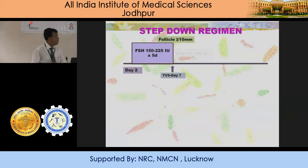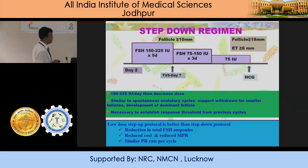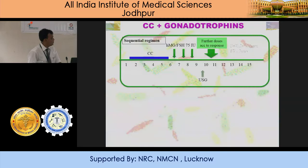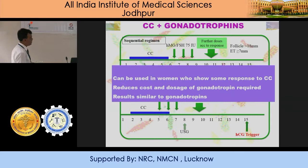The step-down protocol has disadvantages: there are more chances of OHSS (ovarian hyperstimulation syndrome). You start with the higher dose and gradually taper until you get the follicle, then give an HCG trigger. Evidence says that in PCOS with HMG, the low dose step-up protocol is better than the step-down protocol. You can use a sequential or concomitant regime if you are not getting good results. Using CC and reducing the dose of gonadotropins produces results similar to gonadotropins alone — it is cost-effective and reduces the amount of HMG needed when adding letrozole.